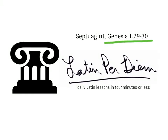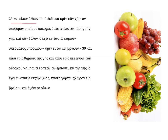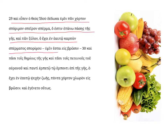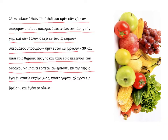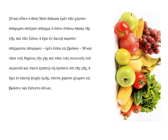Septuagint, Genesis 1:29 and 30. And God said — again we have verb, subject, and then object. Apen, once again, is from Lego. It's the third singular aorist indicative active. Apen is a second aorist.